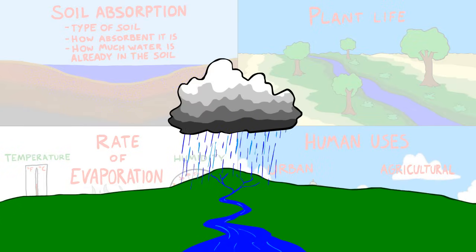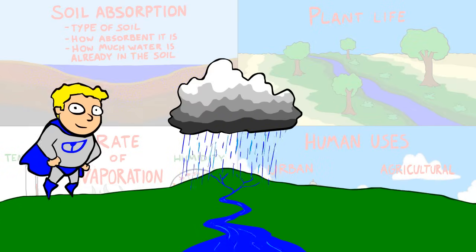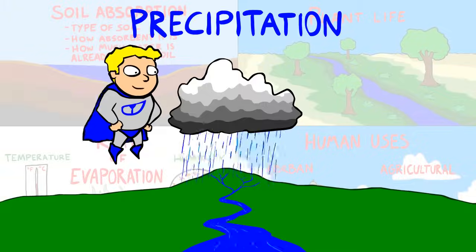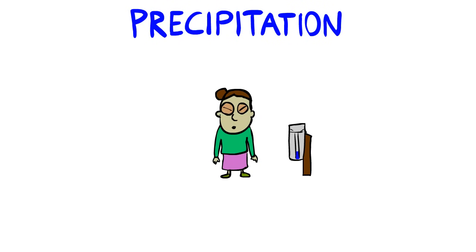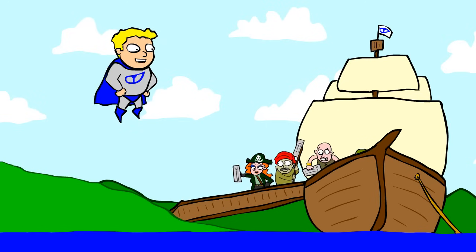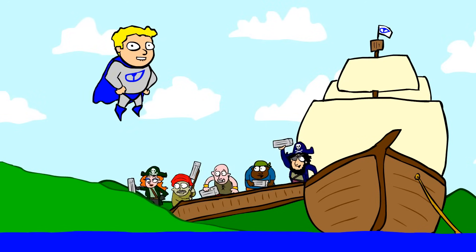But it all starts with one crucial measurement: precipitation. And that's the one you take and report with your gauge. So get out there, grab a friend even, and make a difference in determining the health of your watershed.